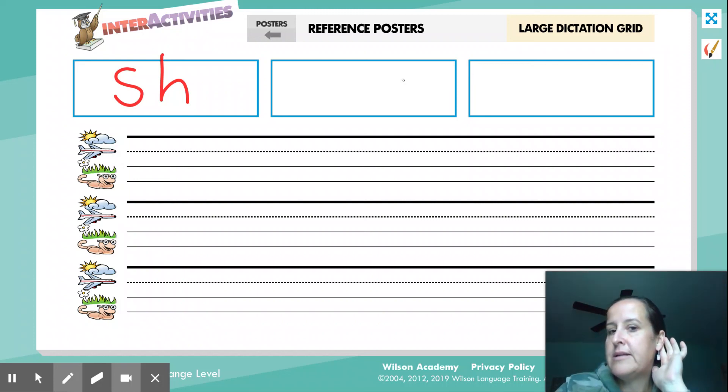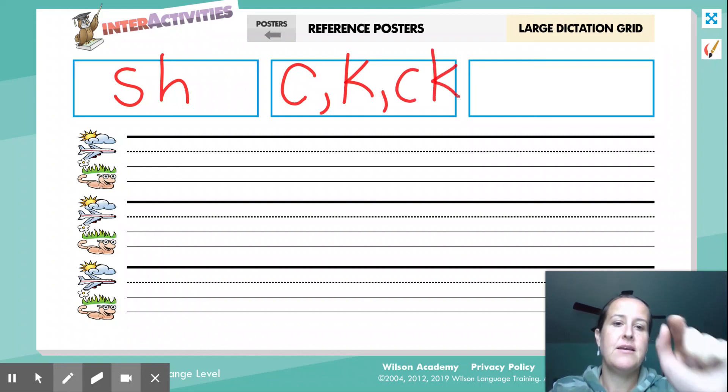Good job. All right, what letters spell k? There are more than one. Nice job. We've got c. We've got k. And ck. Do you remember when we used ck? At the end of a short vowel, after a short vowel. Good job.